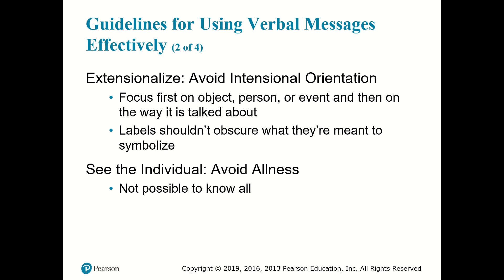The next thing is we should avoid what's called allness. Allness essentially means that we fail to recognize that the world is infinitely complex — thinking we know everything there is to know about something or someone based on a limited amount of interaction with that person. It's not possible that we know everyone's motivations or everything about their personality.